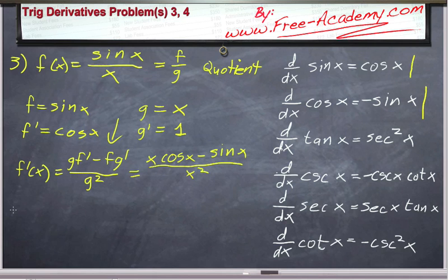Now let me change my color here and let's do this the easier way. The easier way is going to be to rewrite f of x as x to the negative first times sine of x, in which case we can just simply use the product rule. So f prime will be equal to f prime g plus g prime f, with f being x to the negative 1 and g being sine of x in this case.